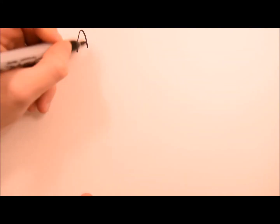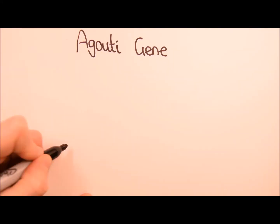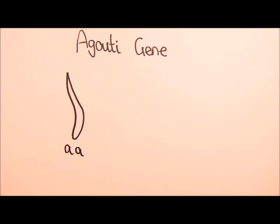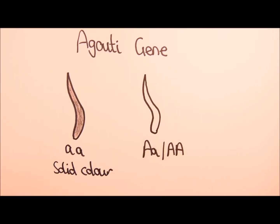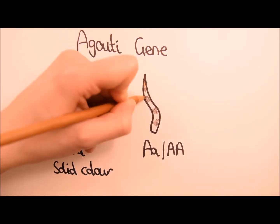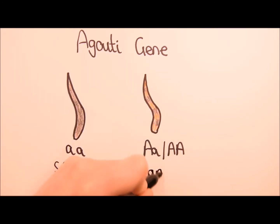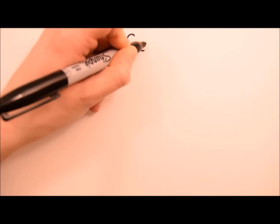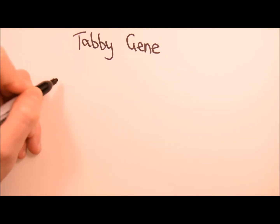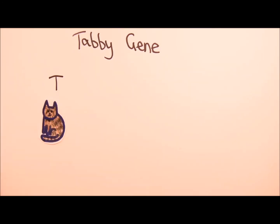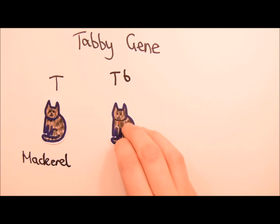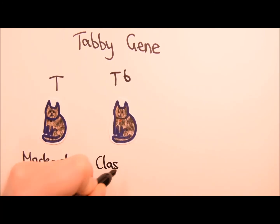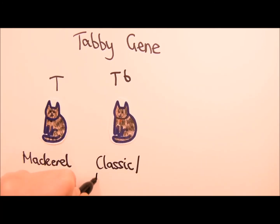The agouti gene in cats determines if the coat is a solid colour. The dominant allele produces ticking or banding. If a cat does express agouti, then the tabby gene comes into play. The dominant allele causes the mackerel or stripe pattern.